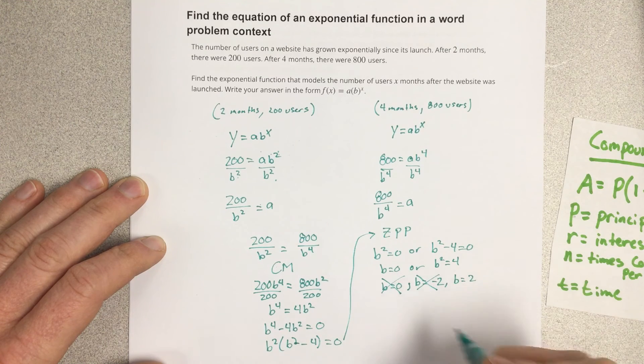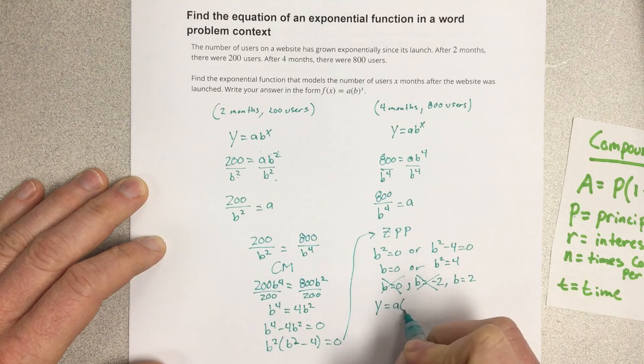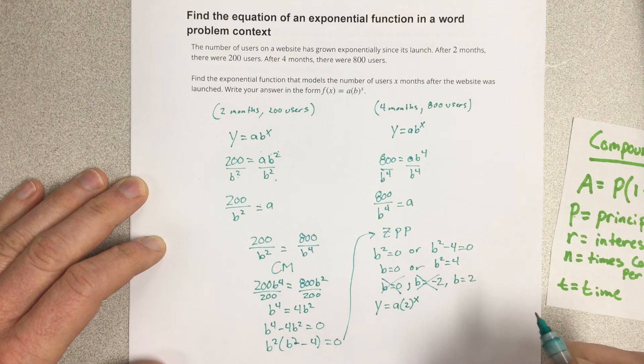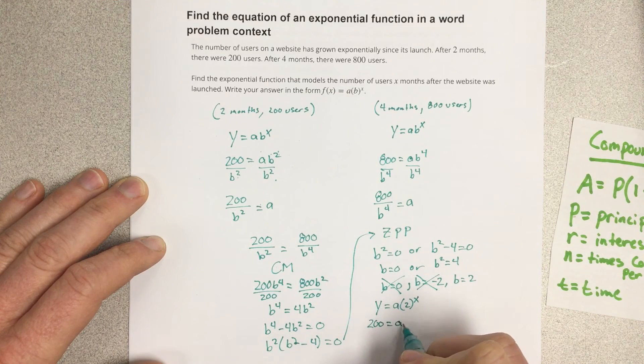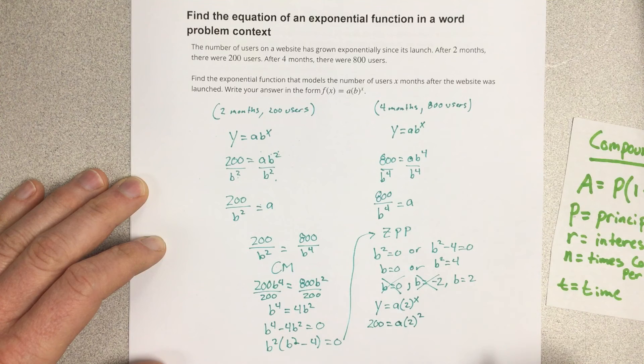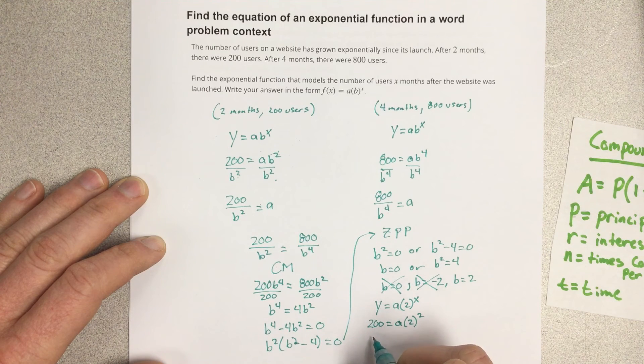So let's find the a value. We'll have y equals a times 2 to the x power. Let's plug in 2 and 200. So we have 200 equals a times 2 squared. So this is 4. And if I divide by 4, that'd be 50 is equal to a.